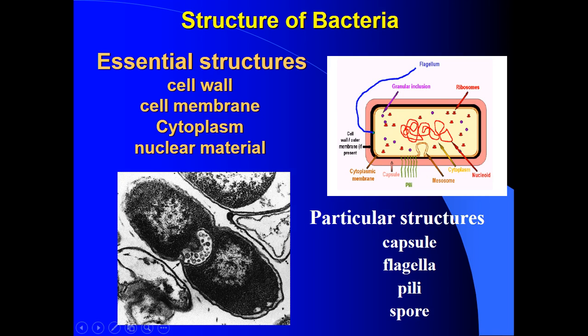Structure of Bacteria: the essential structure of bacteria is the cytoplasm, cell membrane, and nuclear membrane. We will discuss all of these one by one in another lecture. A particular structure is the tetanus bacillus spores — these spores can cause infections in a living body.